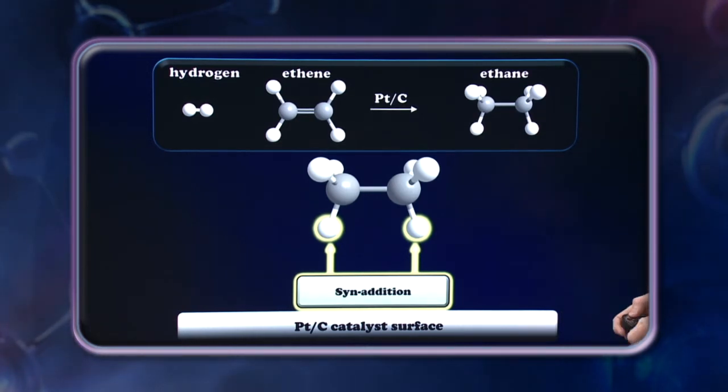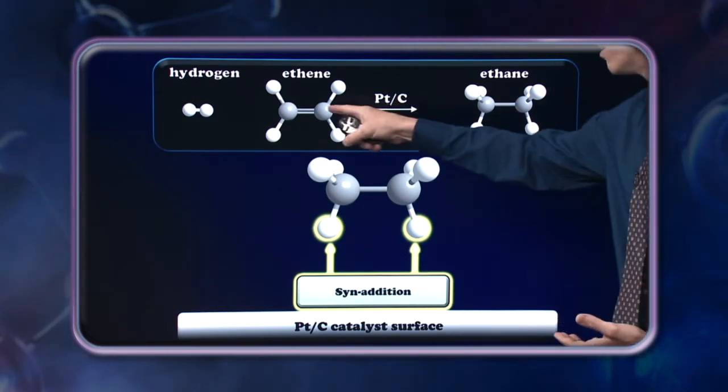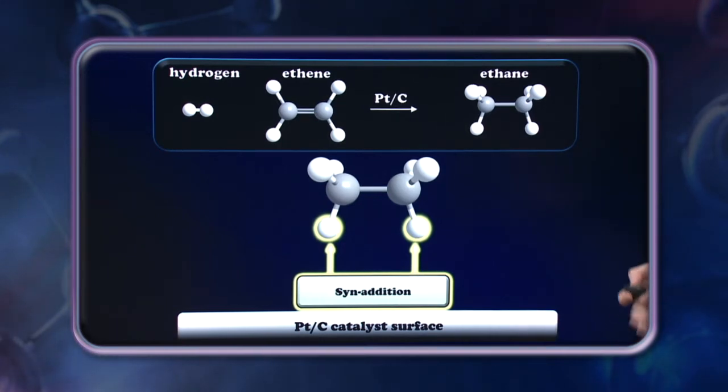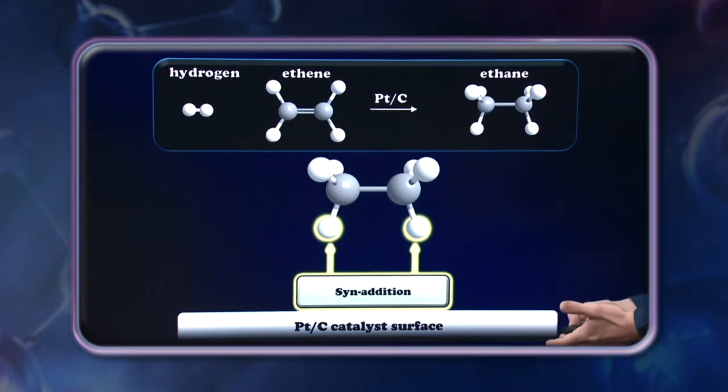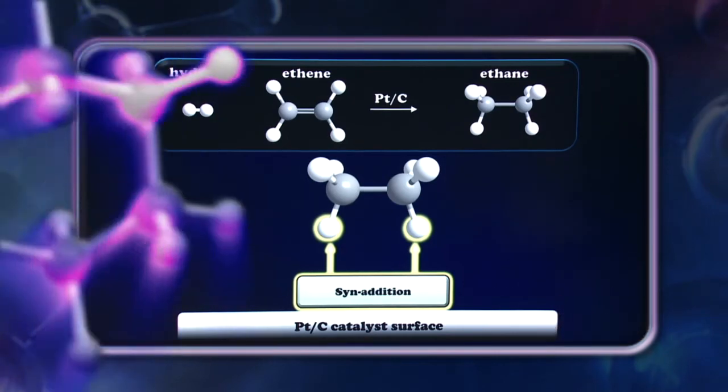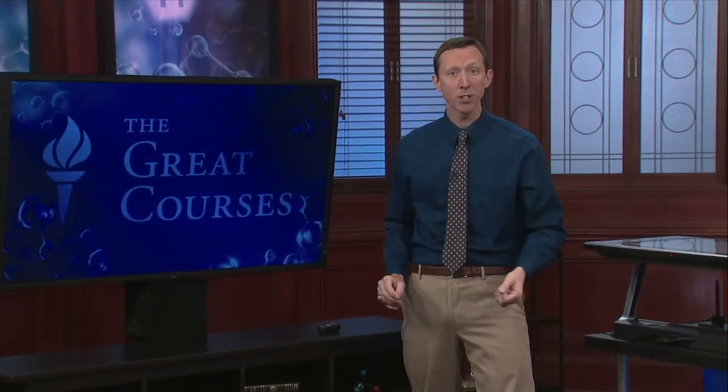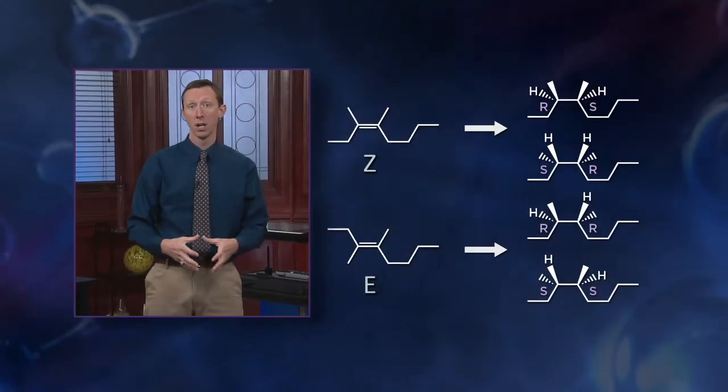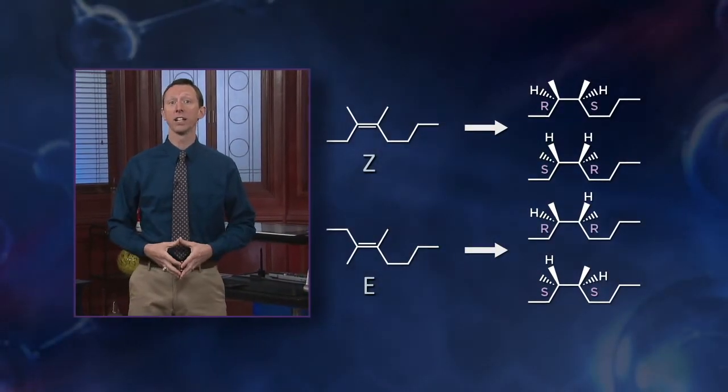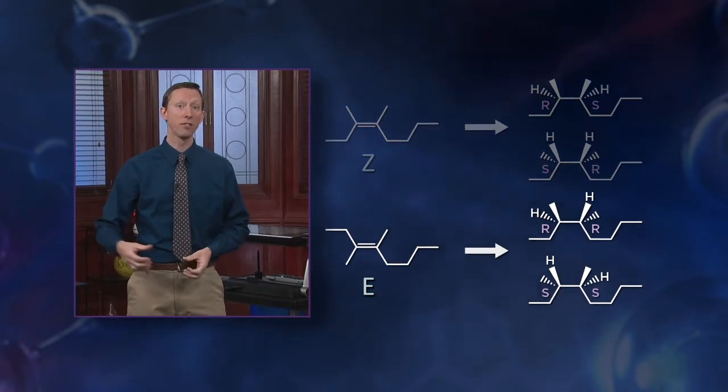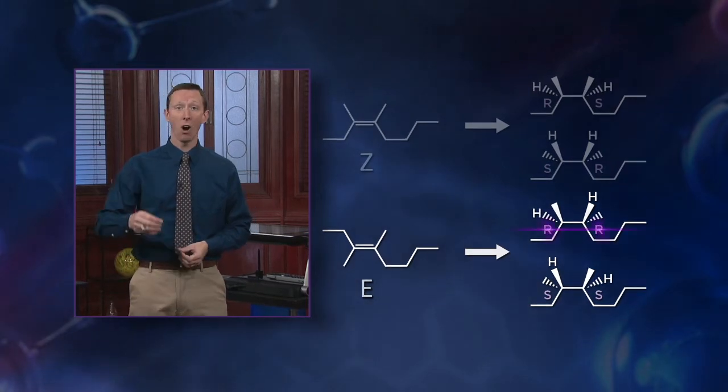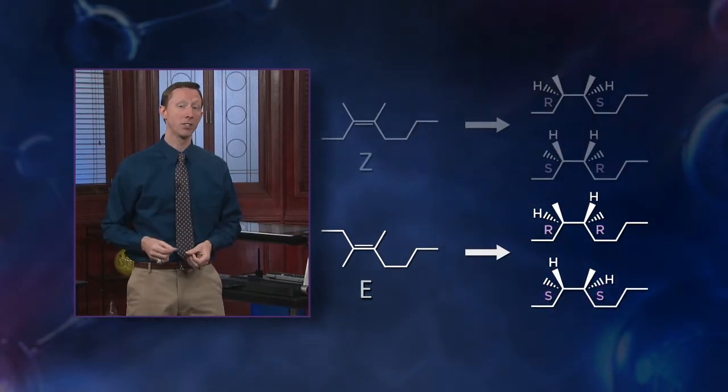So in situations where we have reactions which may produce stereoisomers, meaning when these carbons here have different substituents, we have a potential for a different kind of product to form, one which is either a particular diastereomer or a particular enantiomer. So in the case of asymmetrical alkenes, this means the reaction is diastereoselective. An example of this is catalytic hydrogenation of E-3,4-dimethyl-3-octene. This reaction produces the RR and SS pair of stereoisomers.